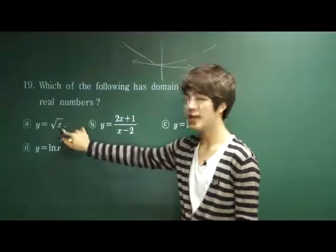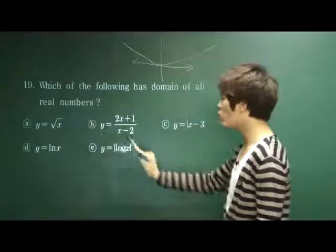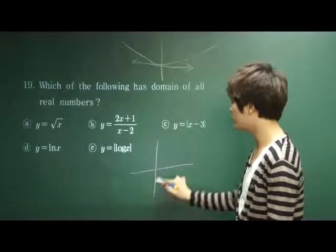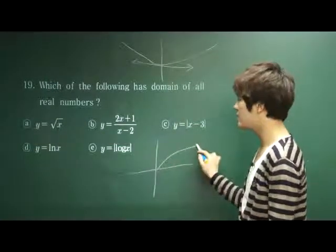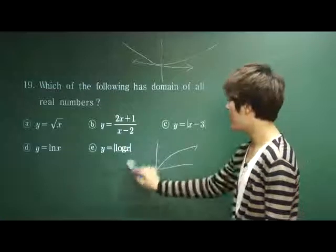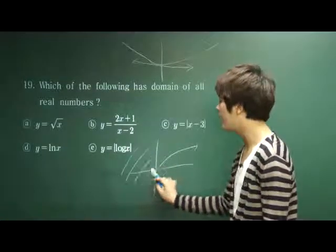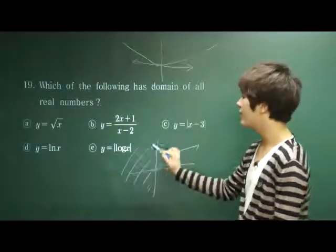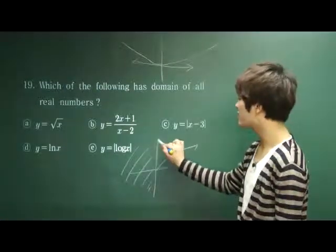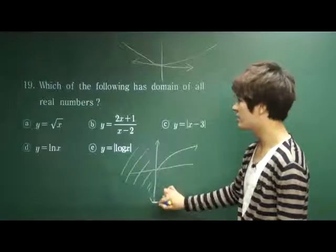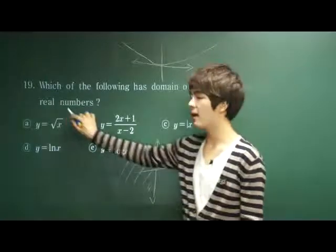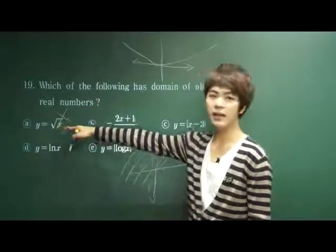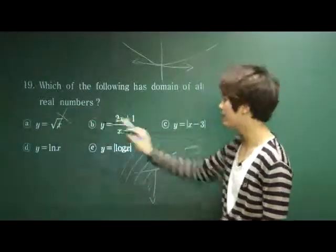Answer choice A: if it's the square root of x, the graph looks like this — it doesn't have anything on the negative x side. Therefore, it doesn't have all real numbers as its domain, so answer choice A cannot be the answer.